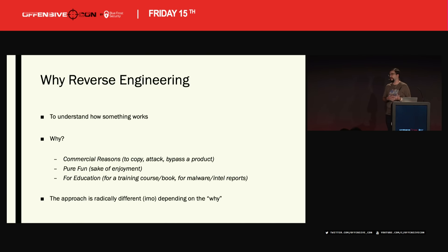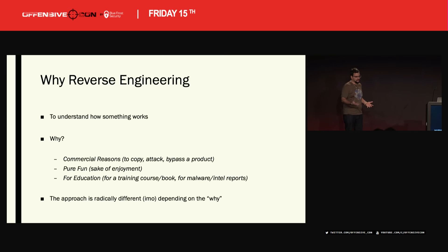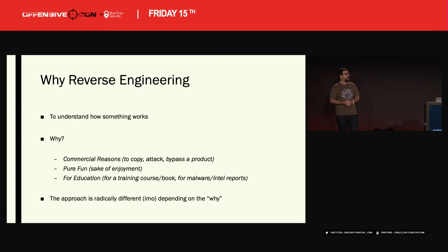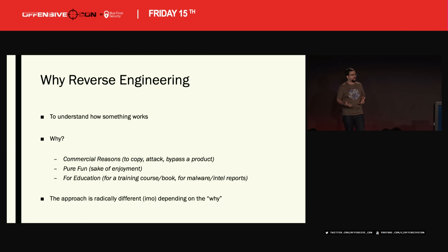So let's look at why there's reverse engineering. Maybe this is simplistic, but reversing is usually to understand how something works. Why does someone need to understand how a closed proprietary system works? Well, sometimes it's commercial reasons — to copy. In the hardware world, there's a lot of reversing of integrated circuits. In biogenetics and pharma there is a lot of commercial copying. To attack, to bypass the product, to understand its defenses — these are commercial, malicious, or sometimes legitimate depending on the country, reasons why you might want to do reverse engineering.